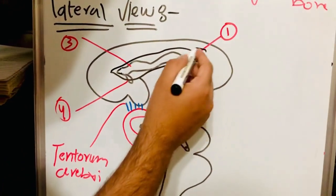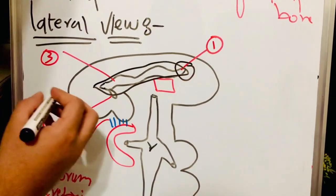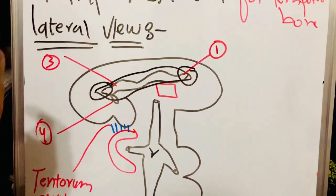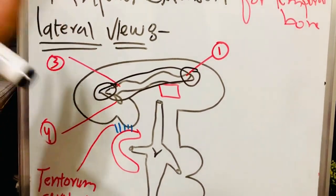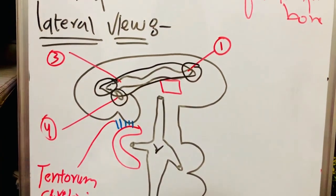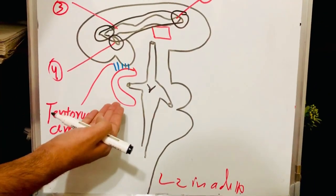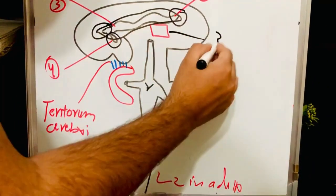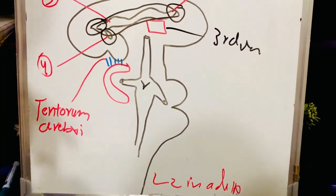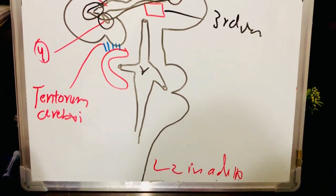For example, this side is providing extension for our frontal lobe, this end is providing the posterior extension for the occipital lobe, and here we can see the extension for our temporal lobe. As we can see in this diagram, this is our cerebellum and this is our third ventricle, and also the spinal cord — in the adult it terminates at the level of L2.